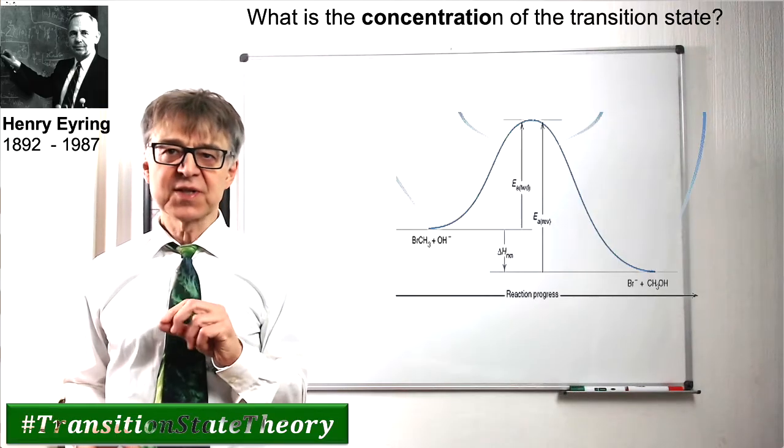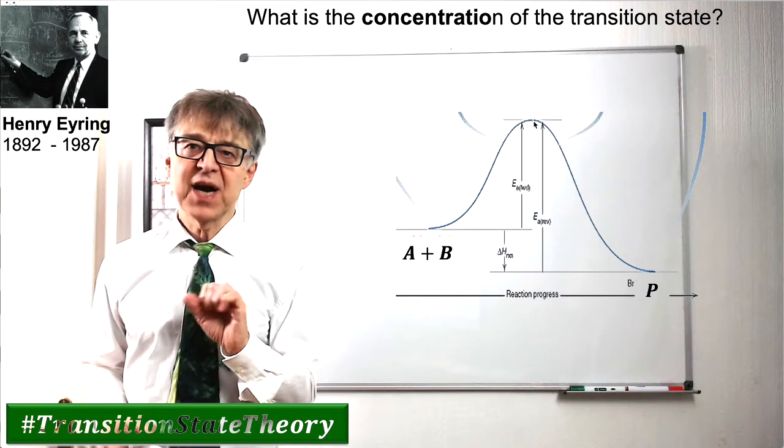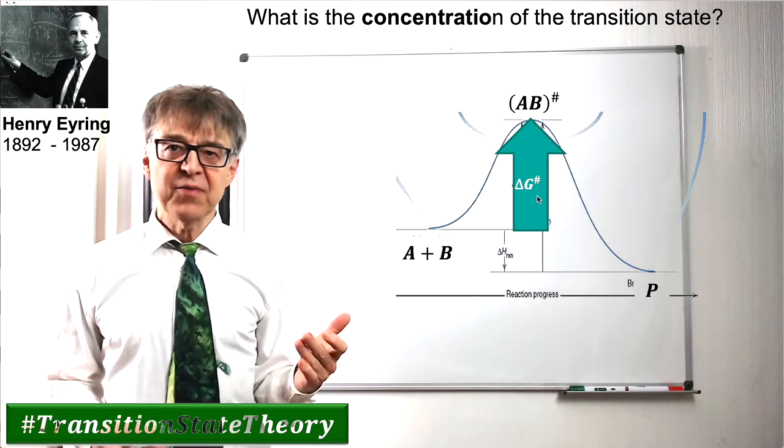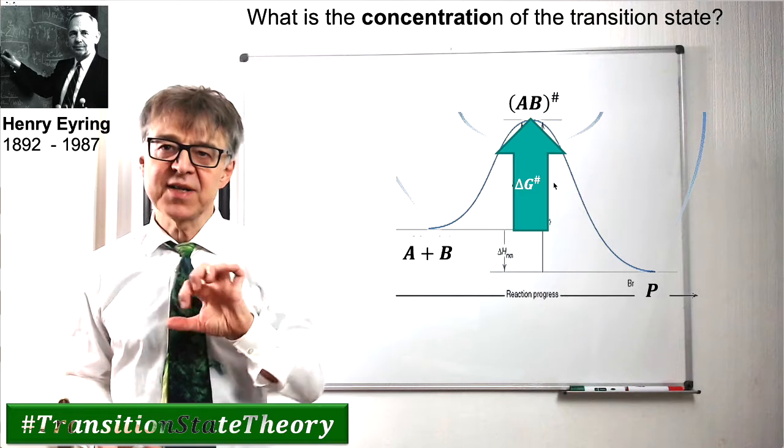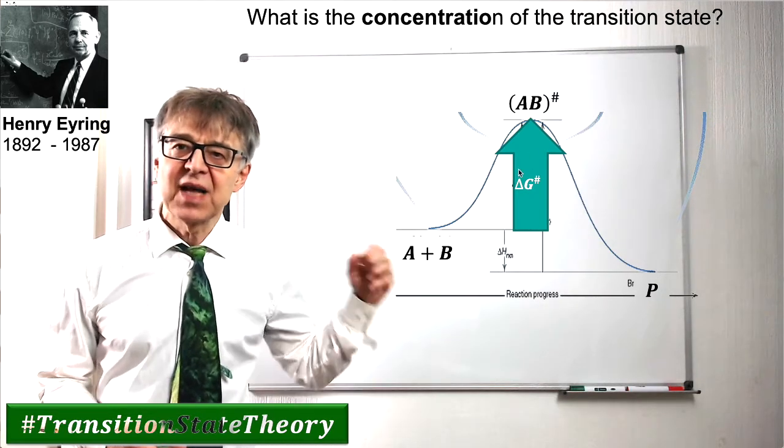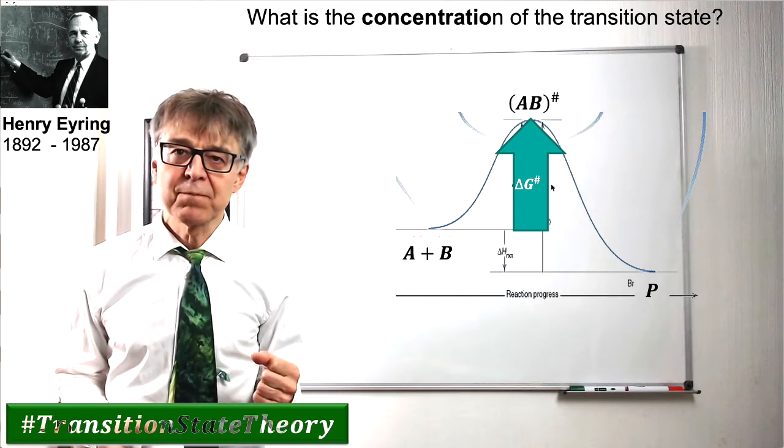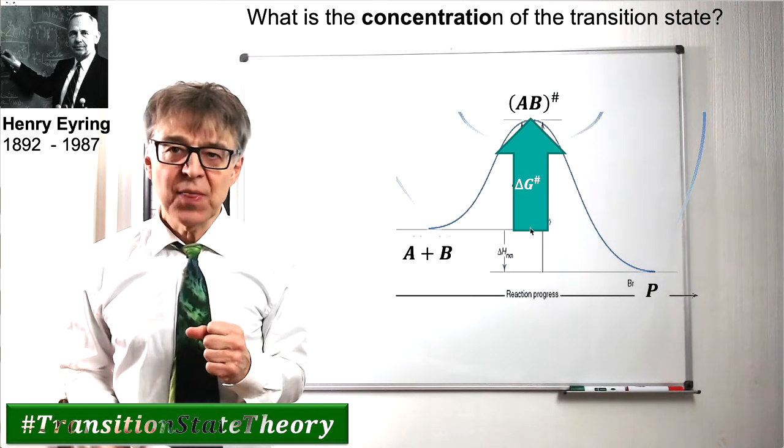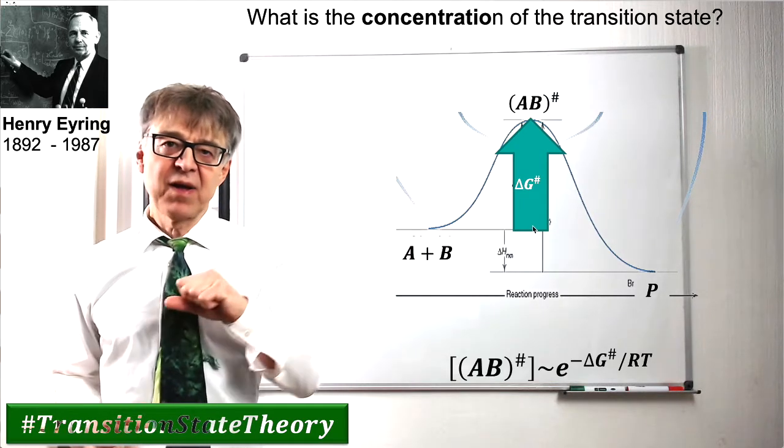The influence of the transition state on the reaction rate was quantified in depth by Henry Eyring. According to Eyring, the reaction rate is primarily determined by the difference in stability between the reactant and the transition state by delta G double dagger, the Gibbs free energy of activation. Any action that reduces delta G in double dagger speeds up the reaction.